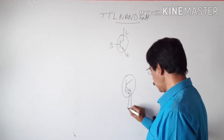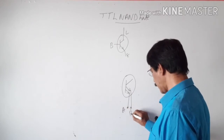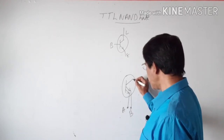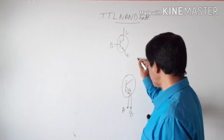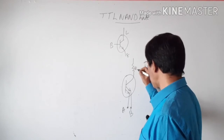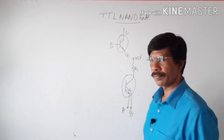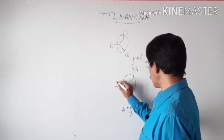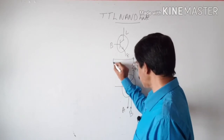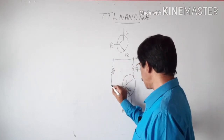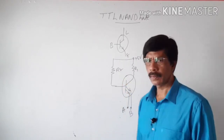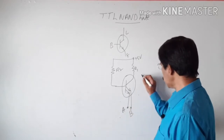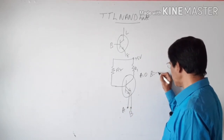For example, take one transistor with base, collector, emitter one (A) and emitter two (B). The collector of this transistor is connected to plus five volts through resistor R1. The base of the transistor is connected again to plus five volts through another resistor R2.